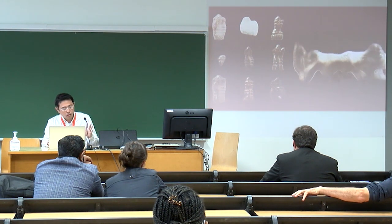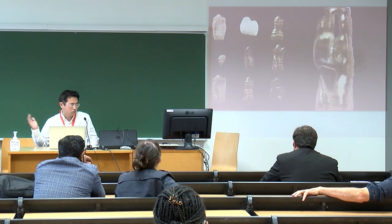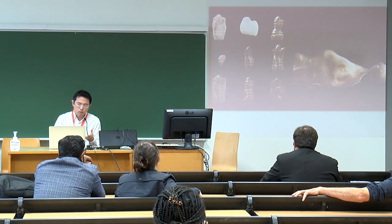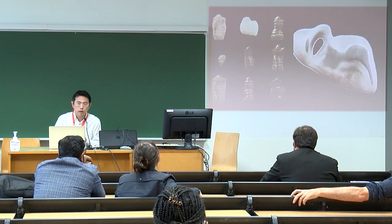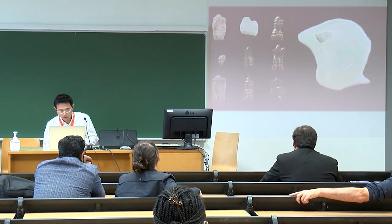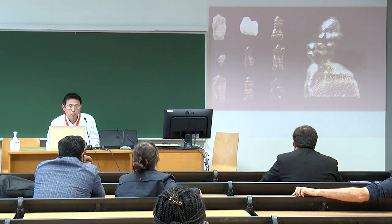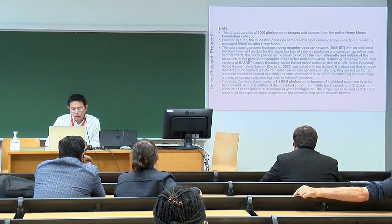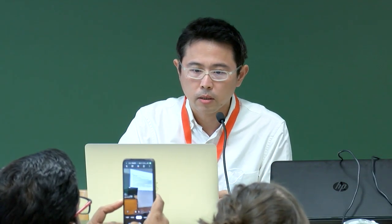On the left you can see some of the generated sculptures trained using the Henry Moore dataset from the Henry Moore Foundation. On the right is the model showing the latent space the neural network has learned — in this case an unconditional generative adversarial network. The data consisted of thousands of photographic images, using the deep encoder-decoder network BasNet to prepare the annotation, performing background removal to facilitate learning, with only a small percentage requiring manual cleanup in Photoshop.